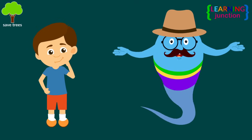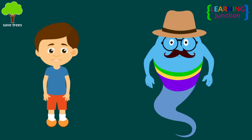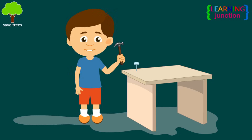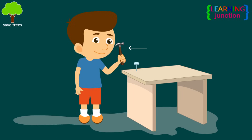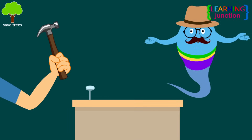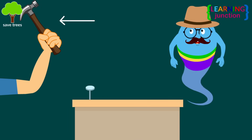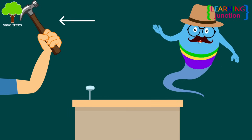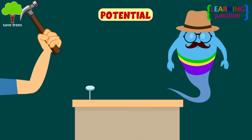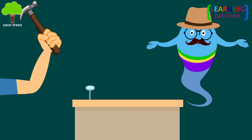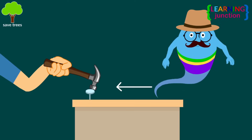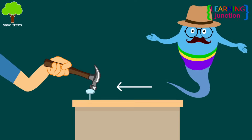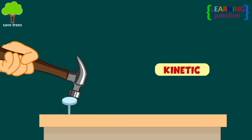You look confused. Let me make it easier for you. Suppose you have a hammer in your hand. When you raise the hammer higher, it'll have potential energy. But as you drop the hammer downwards to bang on the table's surface, it'll have kinetic energy.